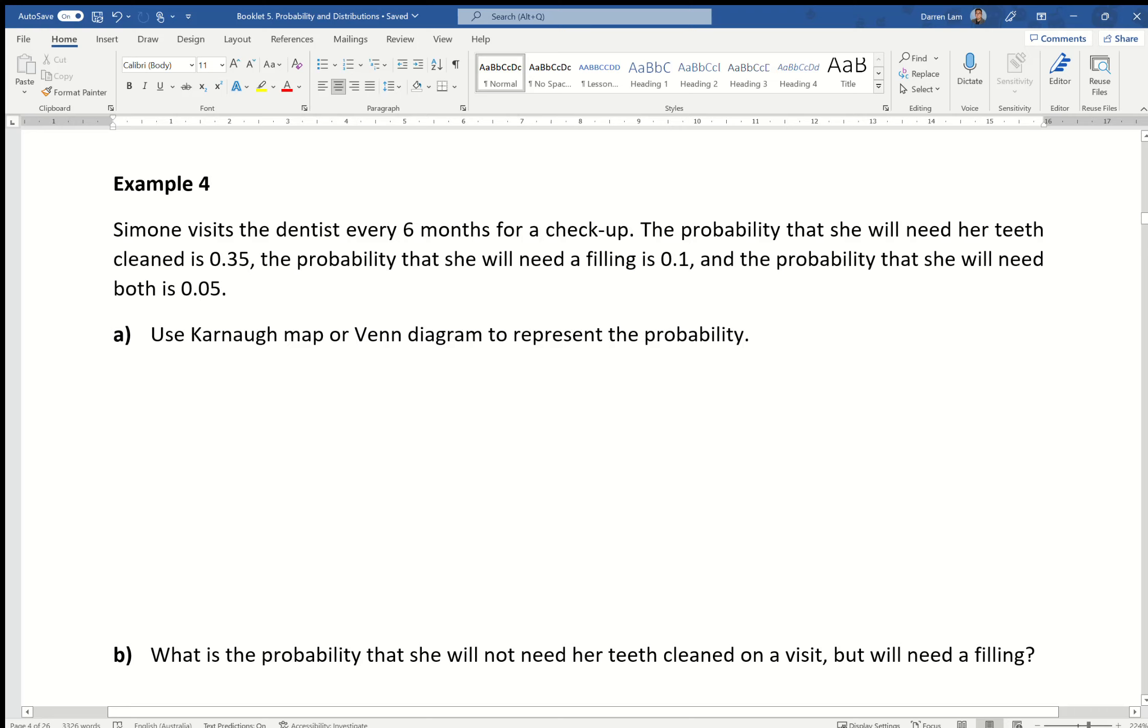Simone visits the dentist every six months for a checkup. The probability that she will need her teeth cleaned is 0.35, the probability that she'll need a filling is 0.1, and the probability that she will need both is 0.05. We have to use a Karnaugh map or a Venn diagram. I'm going to use both to show how to do it either way. Let's start with Venn diagram. The key part of the Venn diagram is these circles, and the part that students always forget is the box on the outside.